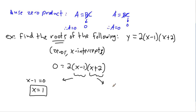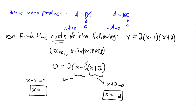For the other factor, (x plus 2) equals zero gives x equals minus 2. That's the second solution. We can verify: if x equals 1, then (x minus 1) is zero, and 2 times zero times (1 plus 2) equals zero — it works. If x equals minus 2, then (x plus 2) is zero, and zero times anything else makes the whole thing zero — that also works.